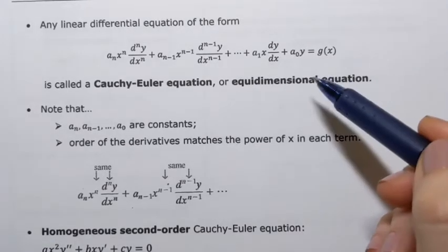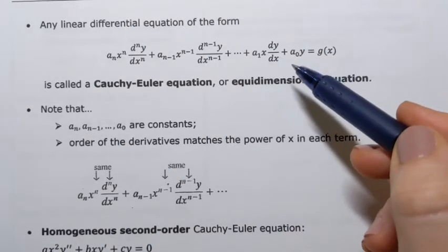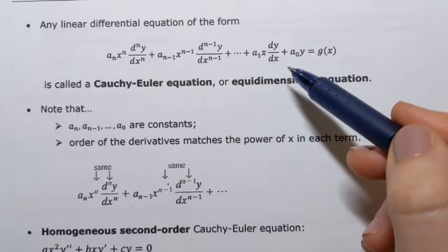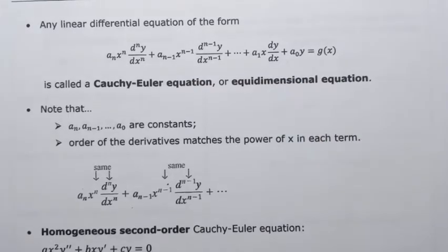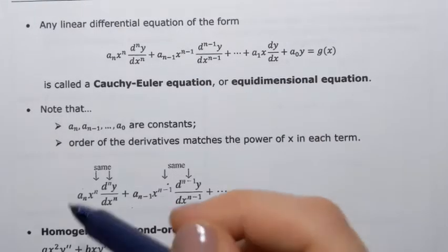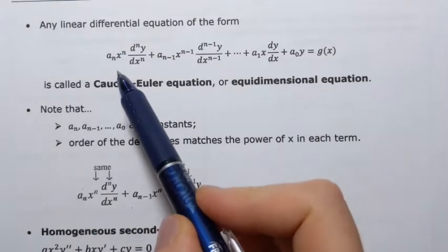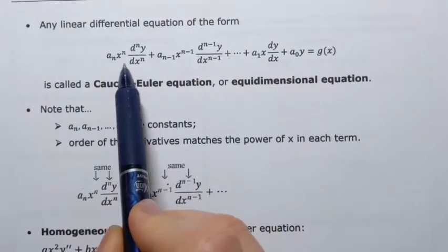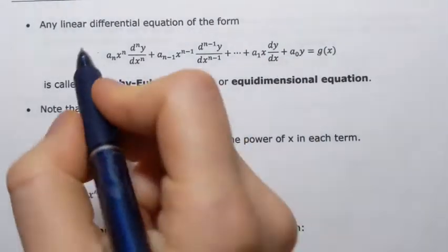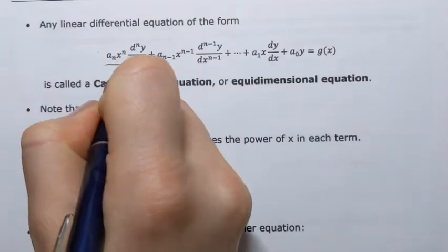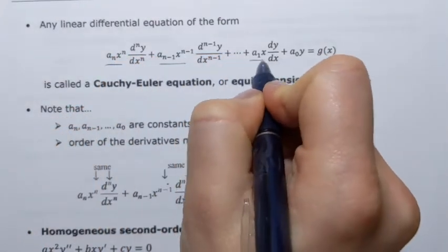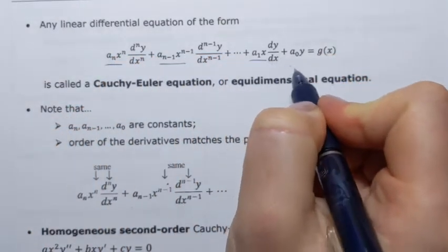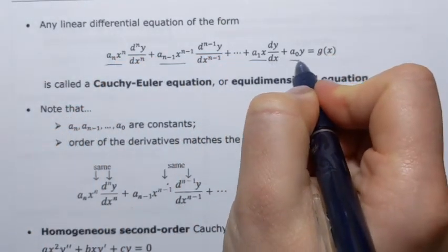What does make this equation special? How do we recognize a Cauchy-Euler equation? We can recognize it by looking at the coefficients. So, these are the coefficients — what can we say about them?